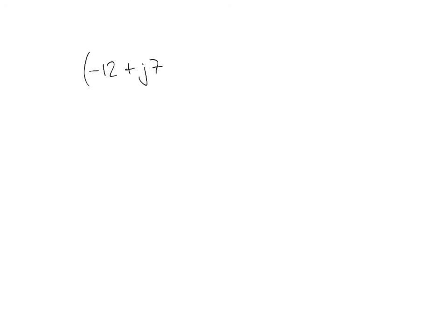Let's look at a slightly more complicated example. We want to find the result of the complex number minus 12 plus j7, raised to the power minus 3 over 4. First, our complex number is in rectangular form using j as the imaginary number. De Moivre's theorem doesn't apply to rectangular form, so we must convert to polar form. Using the polar function on a calculator, we get 13.89 at an angle of 149.74 degrees, raised to the power minus 3 over 4.